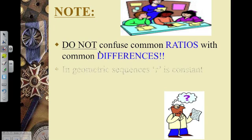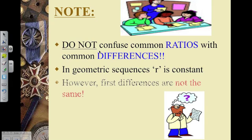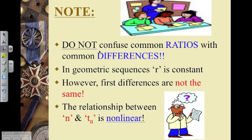Do not confuse common ratios with common differences. Geometric sequences have a common ratio which is constant. However, the first differences are never the same. That is why the relationship between n and Tn for geometric sequences is nonlinear. And it's actually an exponential relationship.